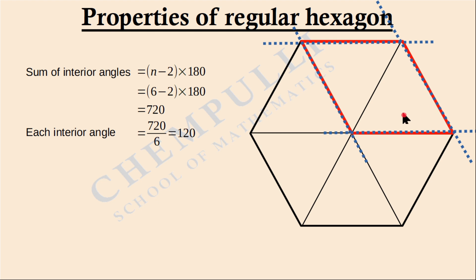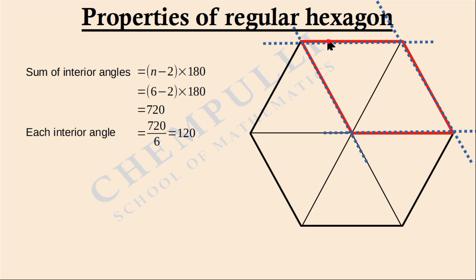Since opposite sides are parallel, the shape formed is a parallelogram. Furthermore, since all sides are equal, it is specifically called a rhombus — a parallelogram with all sides equal. In vector problems, we mainly use the parallelogram property since opposite sides are parallel and equal.